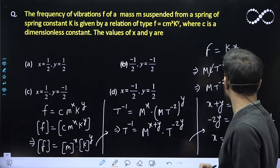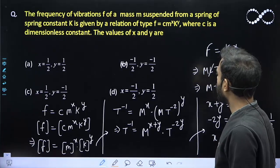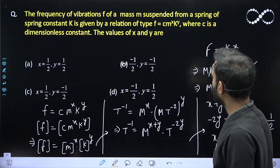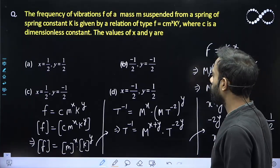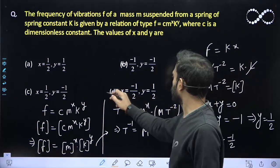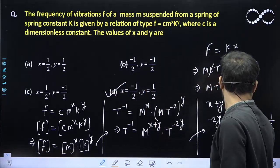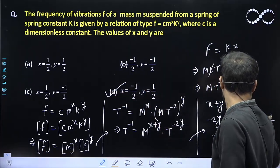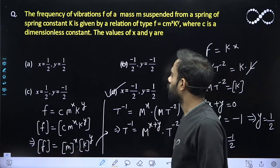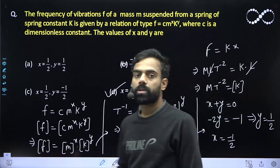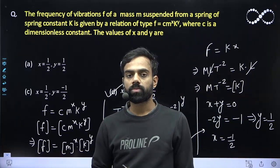Let us see which option is matching. x is equal to minus 1 upon 2 and y is equal to 1 upon 2 — option 4th is matching, so option D is correct. I hope you understood this question.